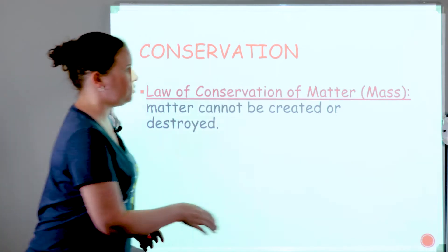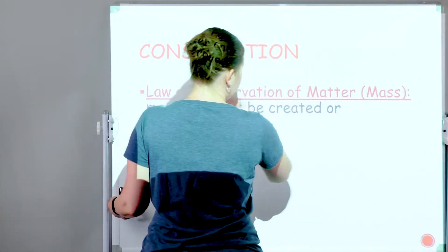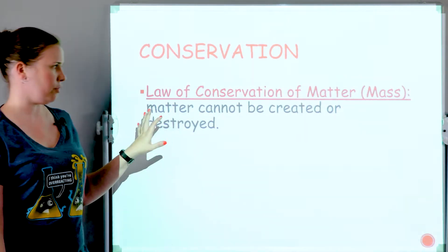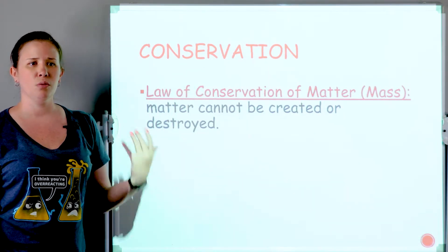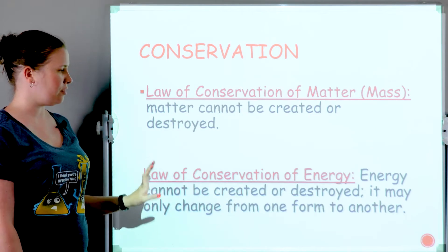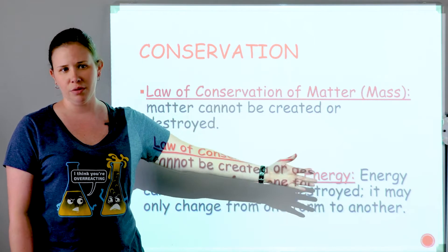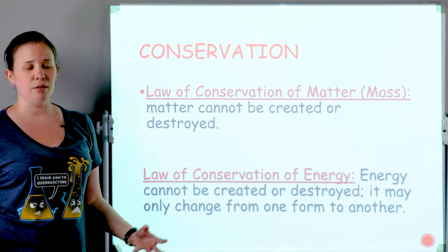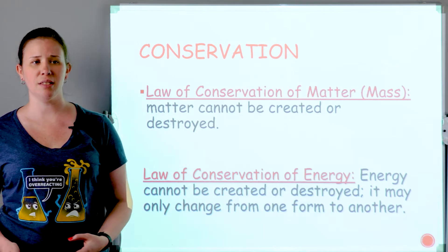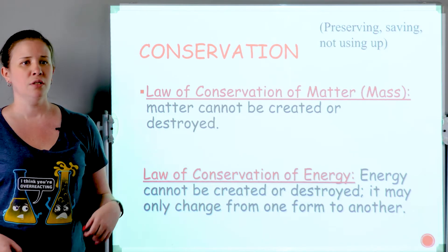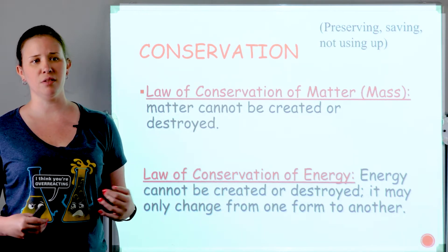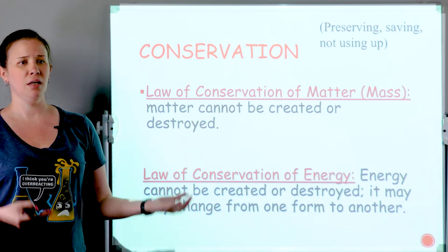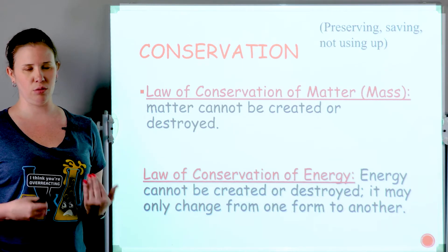Now let's talk about two important laws — they're actually very similar. The first is called the law of conservation of matter, or the law of conservation of mass. The second is called the law of conservation of energy. The only difference is whether we're talking about matter versus energy. The main idea behind a law of conservation is that things are saved or preserved. The law of conservation of matter says matter cannot be created or destroyed, whereas the law of conservation of energy says energy cannot be created or destroyed.